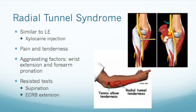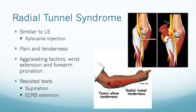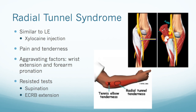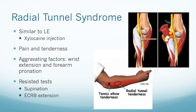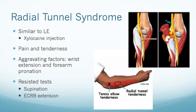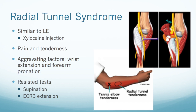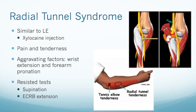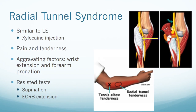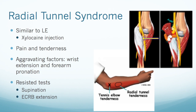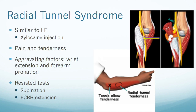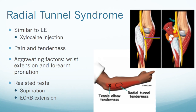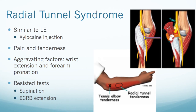The second condition discussed is radial tunnel syndrome. This can present very similarly to lateral epicondylalgia, with pain and tenderness in a similar area. With radial tunnel syndrome, the pain is mainly over the anterolateral forearm in the area of the supinator muscle and the radial neck. The tenderness is about four finger widths below the lateral epicondyle, which differs from lateral epicondylalgia where the main area of tenderness is right on the epicondyle.